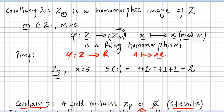We have a second corollary: Zn is a homomorphic image of the integers. We pick m, a positive integer, and phi is a homomorphism — a mapping from the integers to Zm — where x is taken to x modulo m. This is a ring homomorphism, and it is very easy to prove because you use the previous theorem.